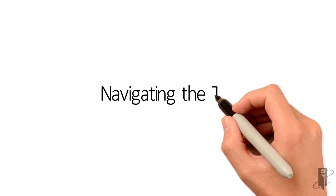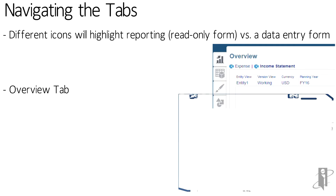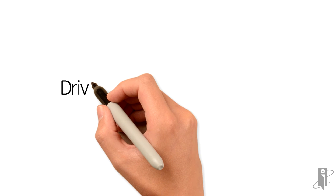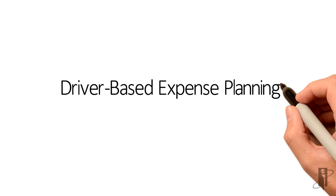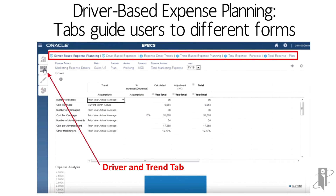Within the Financials Framework, there are four key tabs down the side: the Overview tab, the Driver and Trend tab, the Data Entry tab where you're actually putting in new information, and then the Reporting tab. The tabs will help guide users to different forms. For instance, the tab I'm on right now — the Driver and Trend tab — is where I'm going to go to put in both my driver-based assumptions and my more trending graphical-based assumptions.